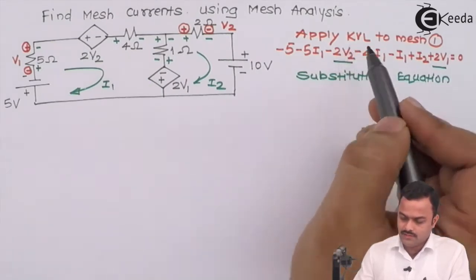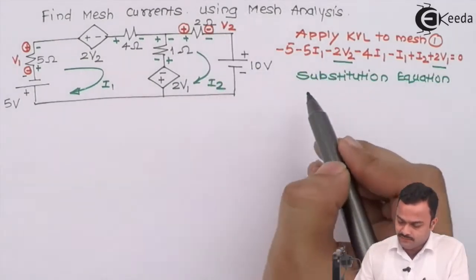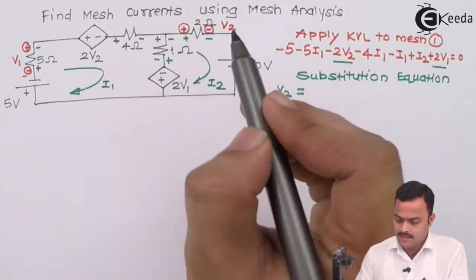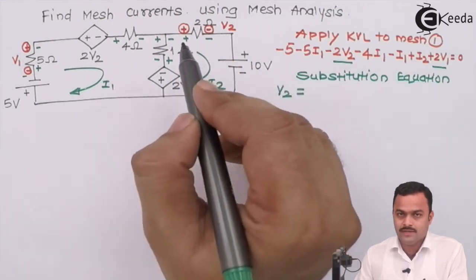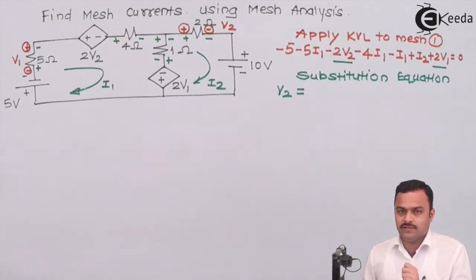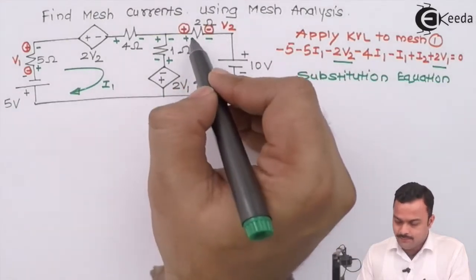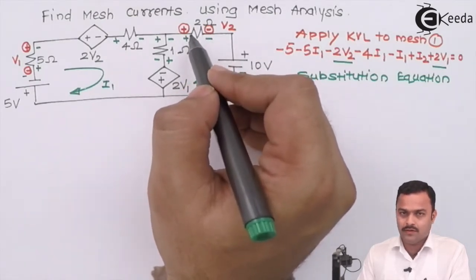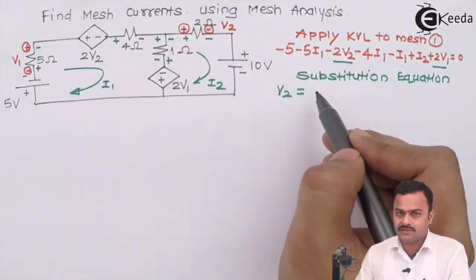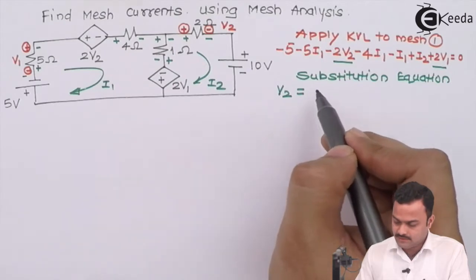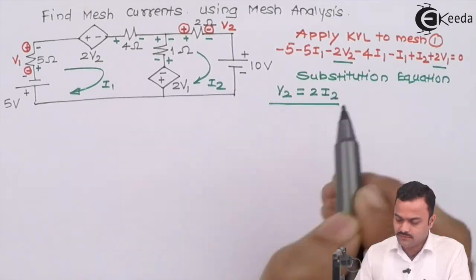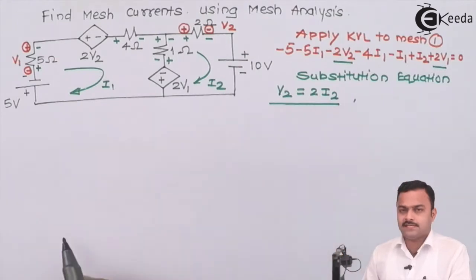Focus on V2: it is the voltage across the 2-ohm resistor, which equals 2 multiplied by the current flowing through it. Now we check polarity: their polarity and our polarity for this voltage are matching. Whenever both polarities match, we assign a positive sign. So V2 = 2·I2. This is the substitution equation for V2.